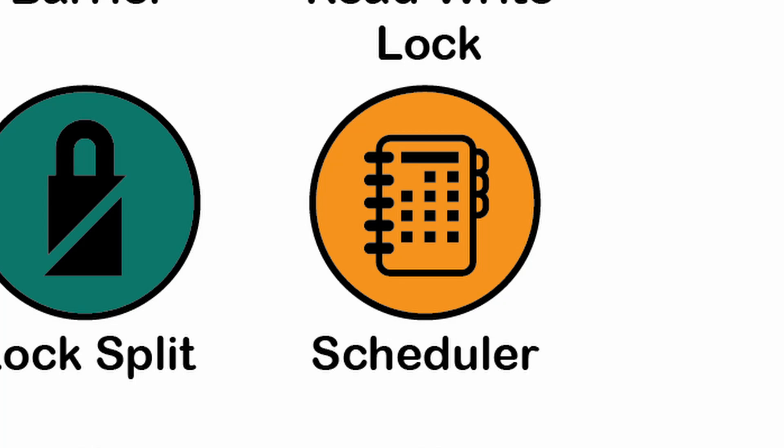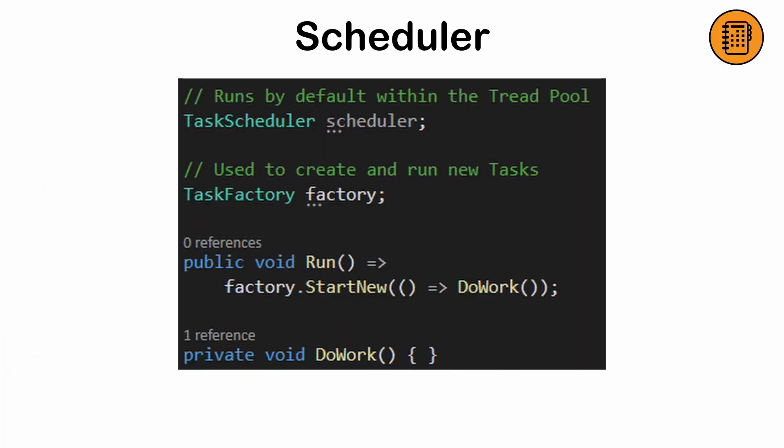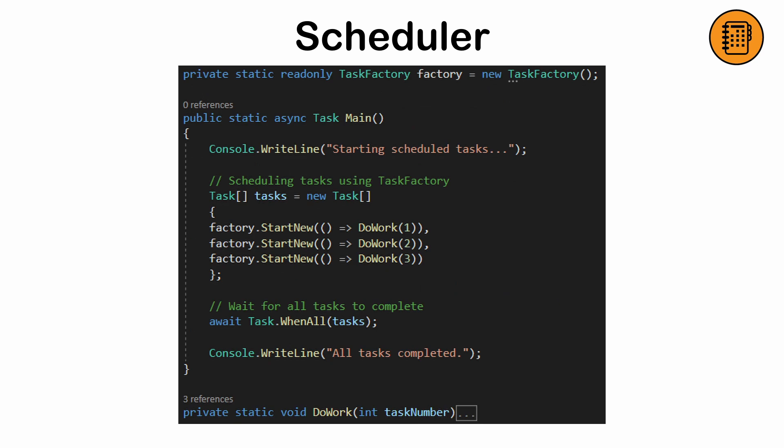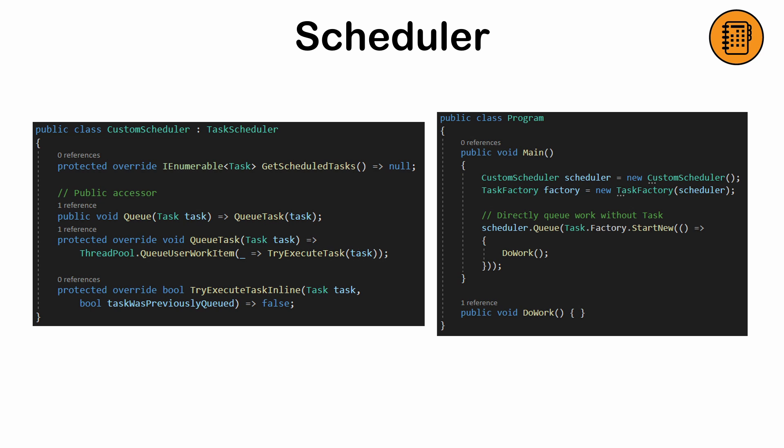The scheduler pattern — a way to assign tasks to threads based on priority or availability. This ensures tasks are completed efficiently while balancing resource usage. It's great for optimizing multi-threaded applications but can be tricky to implement fairly.